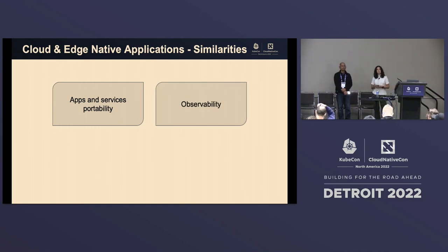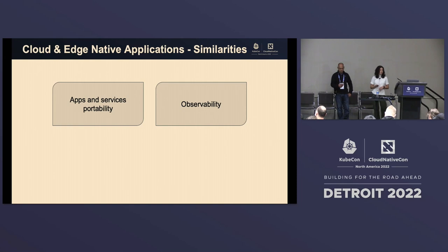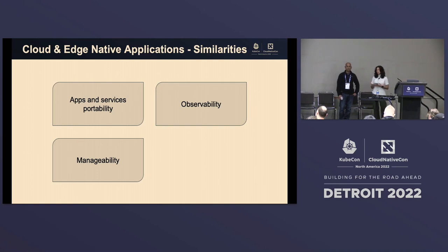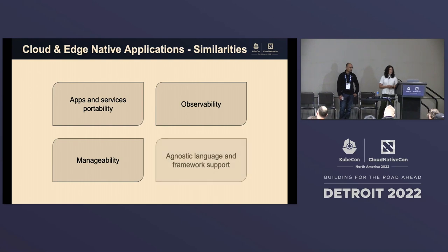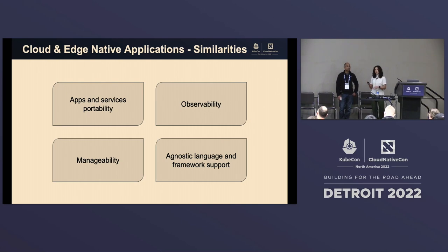Observability — whether deploying on cloud or edge, you should be able to observe everything in one platform: health, data, telemetry, metrics. Manageability — based on your observations, you should be able to take management actions; those actions may look different on edge versus cloud but the idea is the same. And finally, one key cloud native idea is not doing monolithic applications where everything is in the same language. You can have different services using different languages, and that certainly doesn't change whether your application runs only in the cloud or spans to the edge.